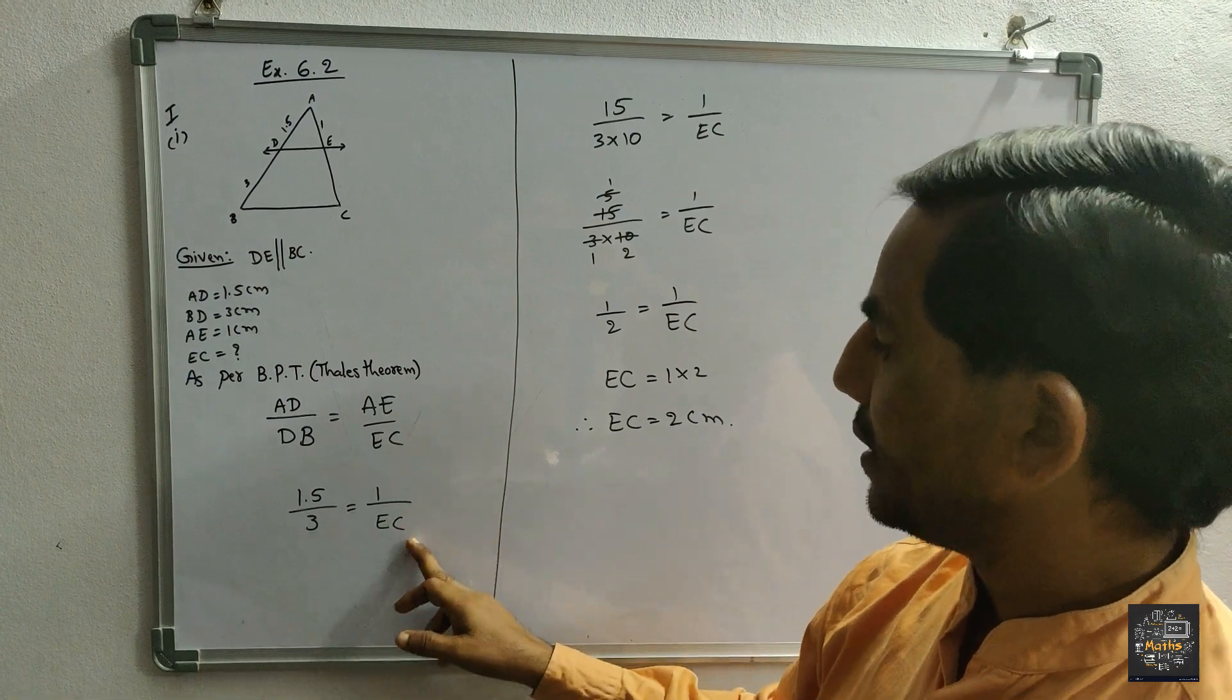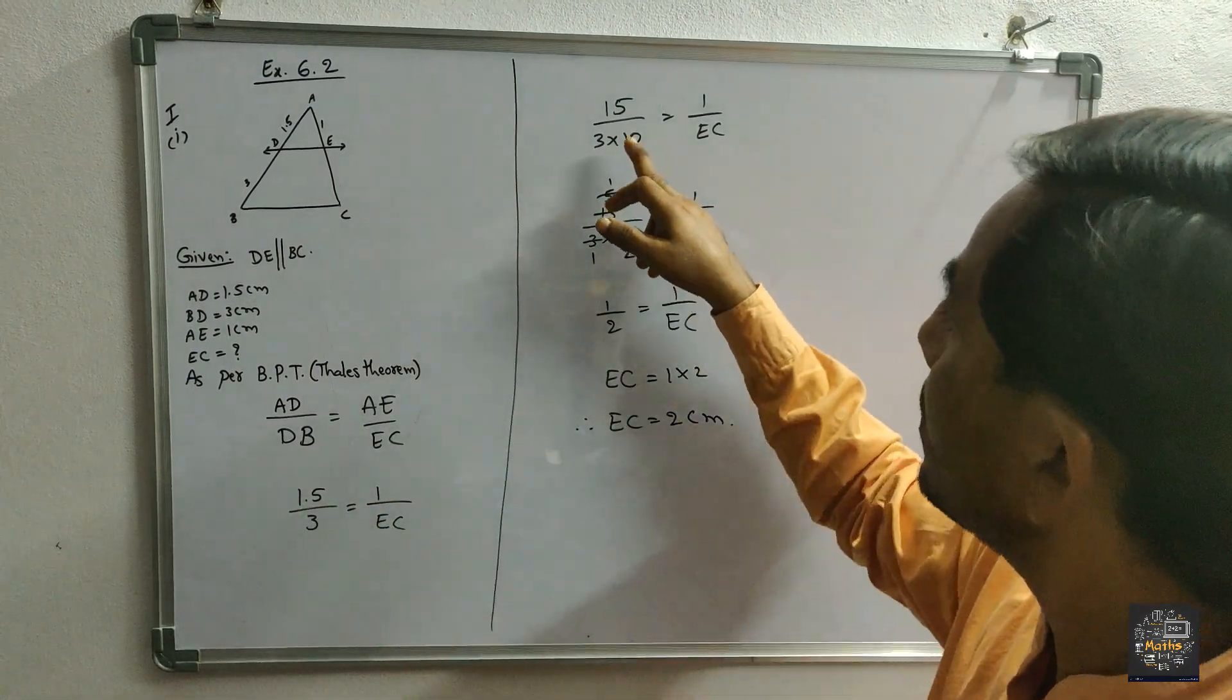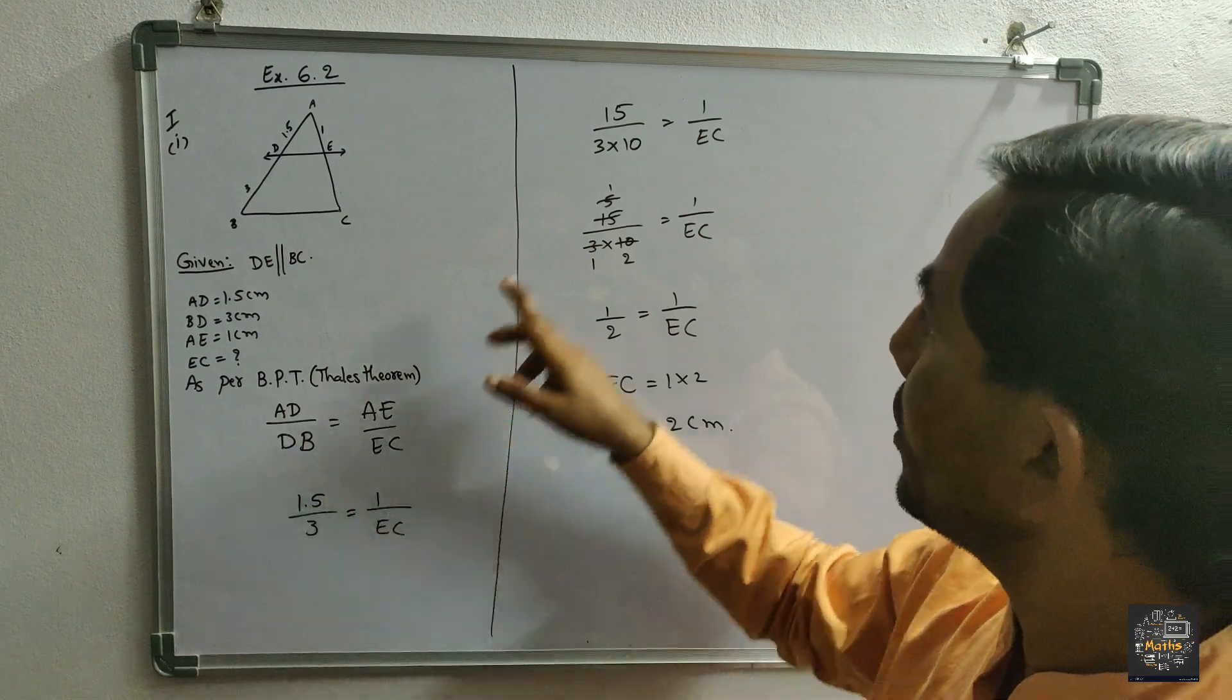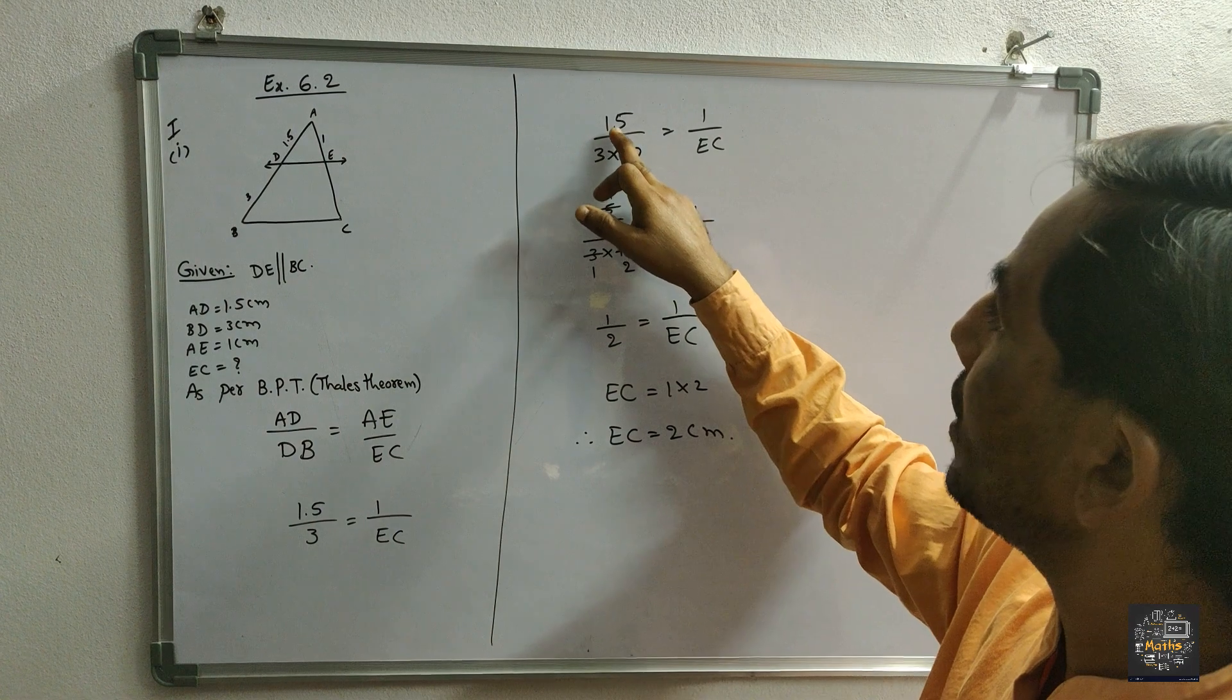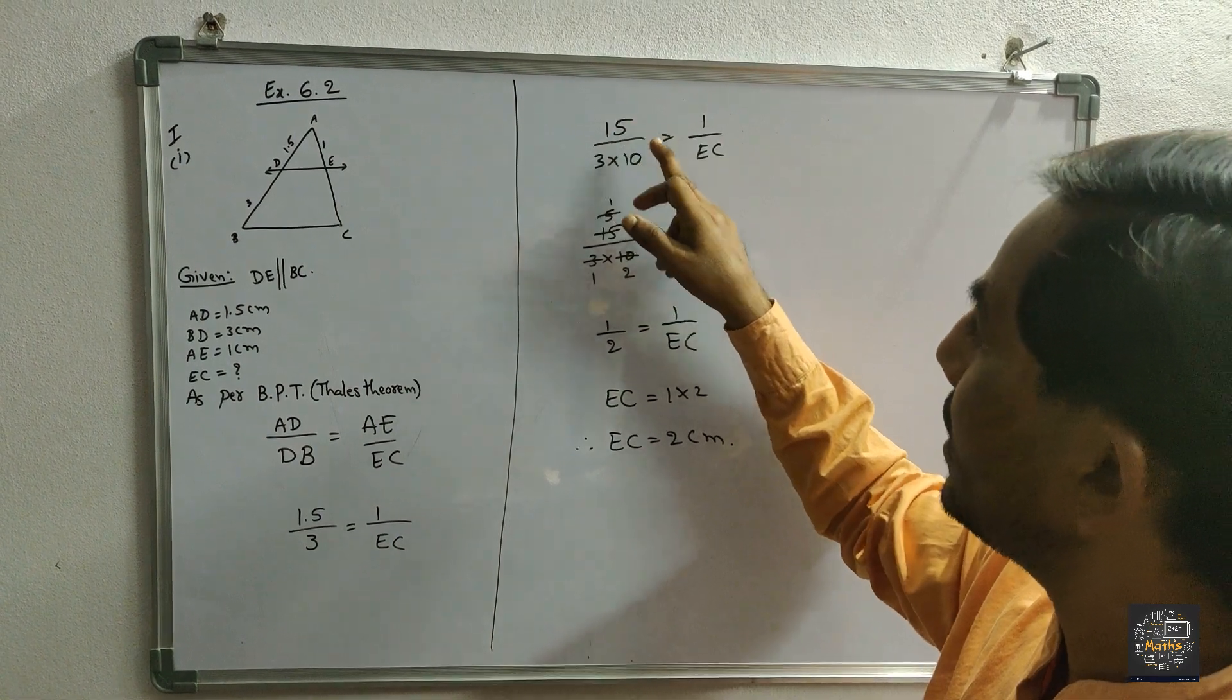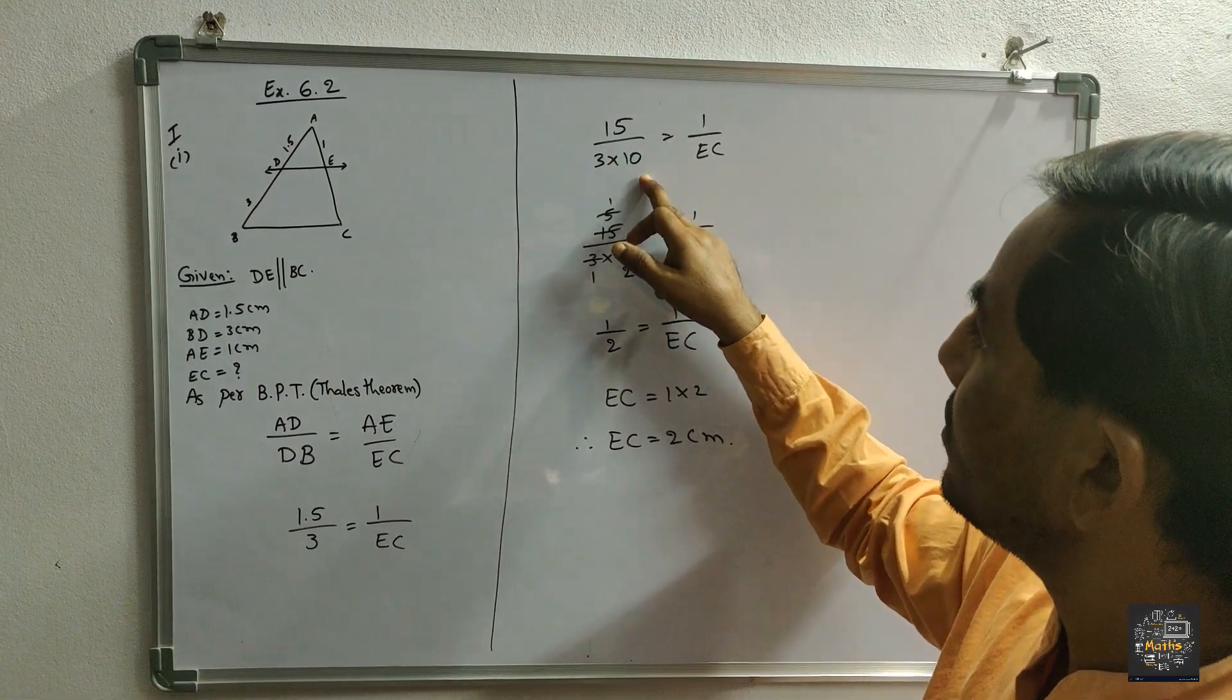For simplification, we remove the decimal point: 15 by 3 into 10. Why are we writing 10? Because after the point 1 digit is there, you write in the denominator 10.